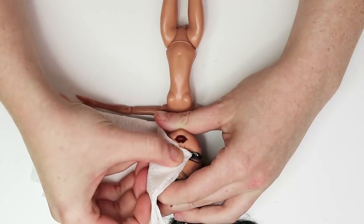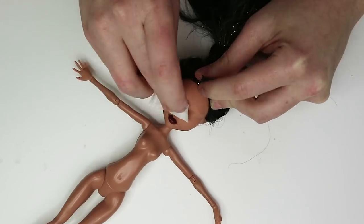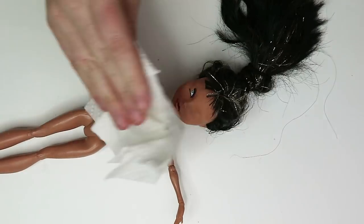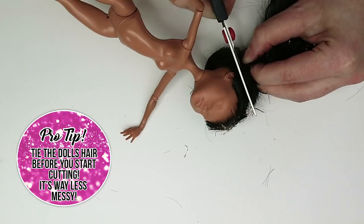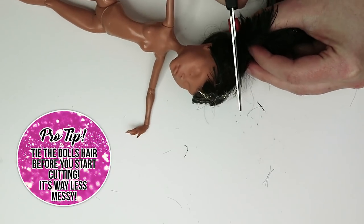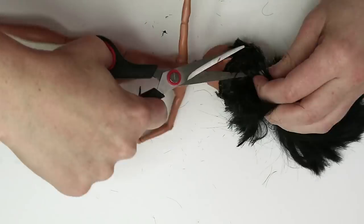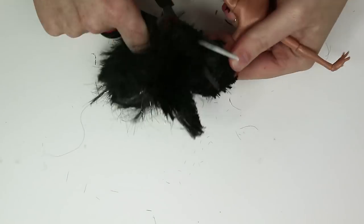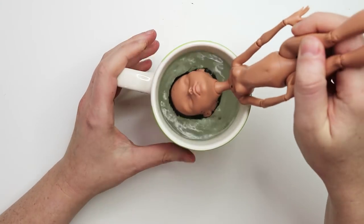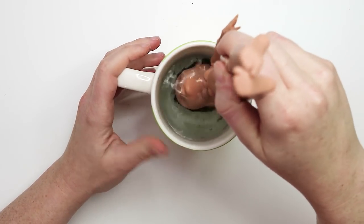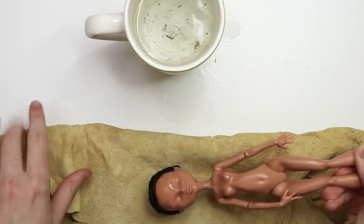Now I'm just gonna dunk her head in some boiling water and let that sit for about five minutes to soften up all the plastic to make it easy to remove her head.